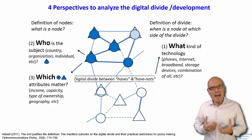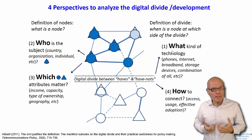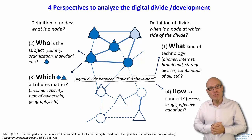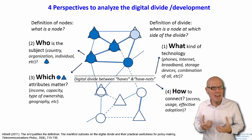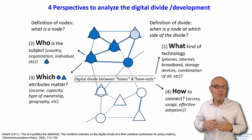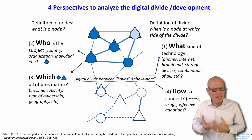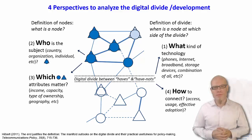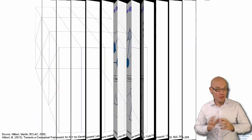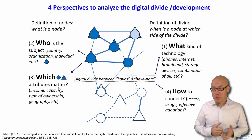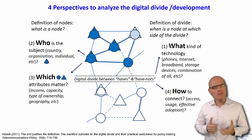Finally, we ask how are they connected — what is the technology, is it broadband? And the other question is: how intense is the usage? Is it enough that people simply have broadband, or do they have to use it extensively, or does the usage already need to have some kind of effective impact — and only then we say they really adopted the technologies. So you can define a digital divide through four different perspectives: who, with which kind of attributes, connects how, to what.